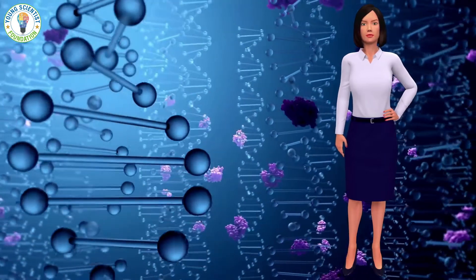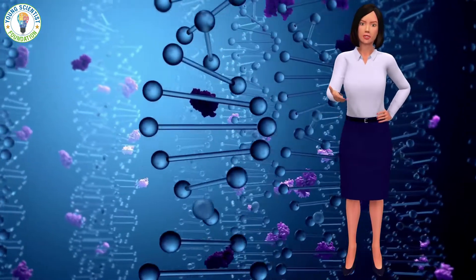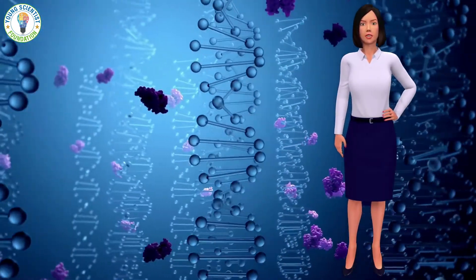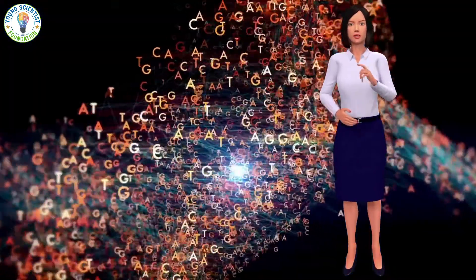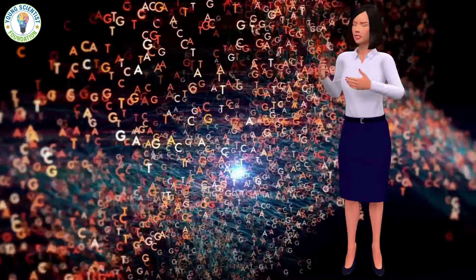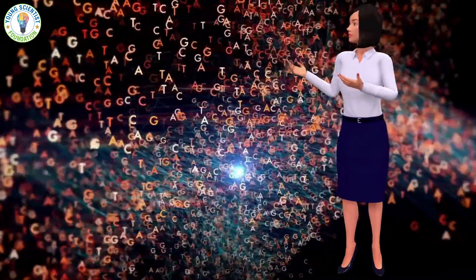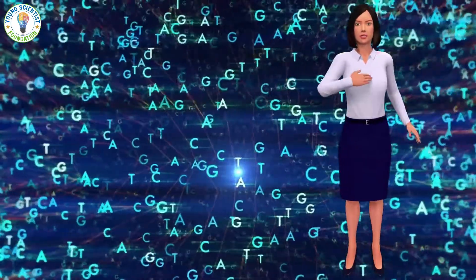An organism's complete set of DNA is called its genome. Each genome contains all of the information needed to build that organism and allow it to grow and develop. Every single cell in the human body contains a complete copy of the approximately 3 billion DNA base pairs that make up the human genome.